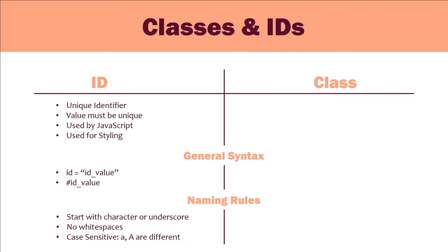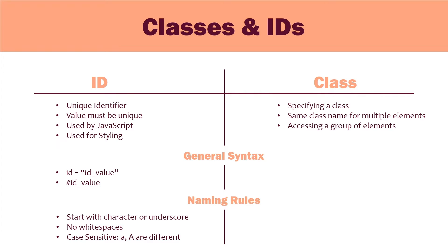Now let's talk about classes. The class attribute is used to specify a class for an HTML element. Unlike an ID, you can define the same class for multiple HTML elements. If you want to access or apply styling on a group of elements, use the class attribute instead of ID in stylesheets or in scripts. Moreover, you can also define multiple classes for a single element.